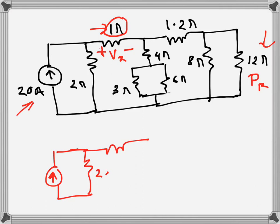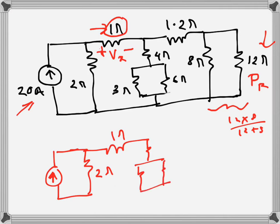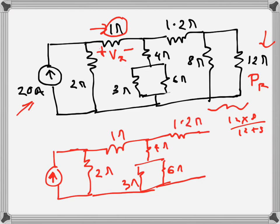Let's keep this 1Ω as it is. Now these two resistances are in parallel, so the parallel combination of 12Ω and 8Ω becomes 12 times 8, which is 96, over 12 plus 8, which is 20 — giving us 4.8Ω. So we have 3Ω, 6Ω, 4Ω, 1.2Ω, and 4.8Ω.